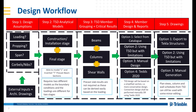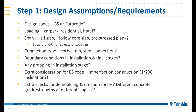Next, let's look at each step in more detail. Step 1: the design assumptions and requirements. What is the design code — using BS or Eurocode? What types of loading to apply? Type of span — is it half slab, hollow core slab, pre-stressed plank? Any structural or non-structural topping? What is the connection type? What are the boundary conditions in installation and final stages? Any propping in installation stage? Any extra consideration for BS code, for example imperfection construction?